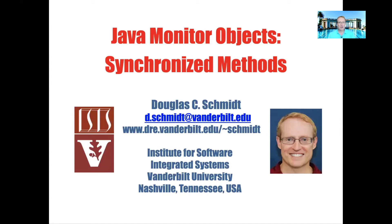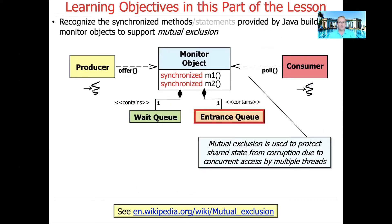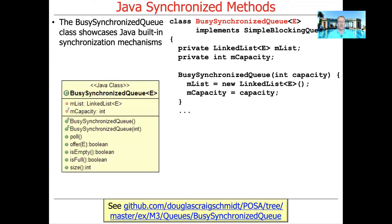Now that we've talked a bit about monitor objects in general, let's start focusing in on the piece parts provided by Java's built-in monitor objects, starting with synchronized methods. We'll talk about how Java provides synchronized methods that are used to support mutual exclusion. And as we've talked about many times before, mutual exclusion is a means of protecting shared mutable state from corruption due to concurrent read-write access by multiple threads. We're going to use another example called the Busy Synchronized Queue to illustrate these concepts.